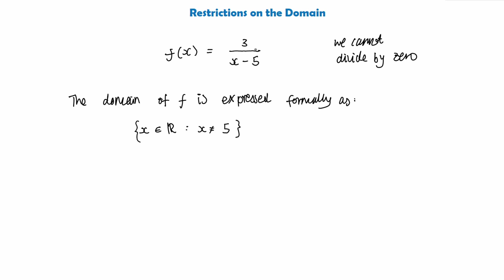To work this out, we simply set the bottom part of the fraction equal to 0, since we don't want it to equal 0. We put a line through the equals sign to show it cannot equal 0, then rearrange by adding 5 to both sides, finding that x cannot equal positive 5. So our domain for f is: x is any real number, but x cannot equal 5.